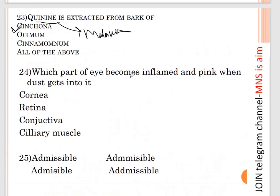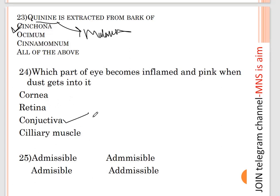Question number twenty-four: which part of the eye becomes inflamed and pink when dust gets into it? Options are cornea, retina, conjunctiva, or sclera muscles. The correct option is option C — conjunctiva.